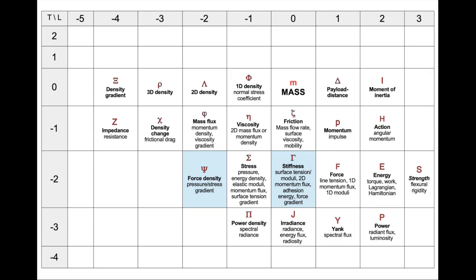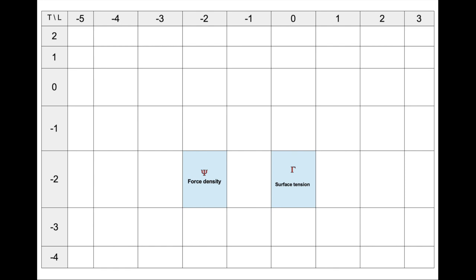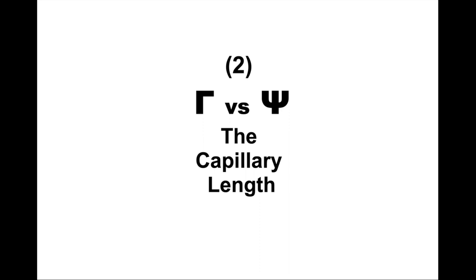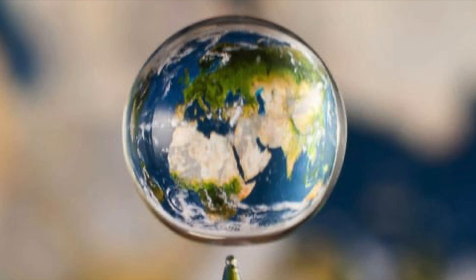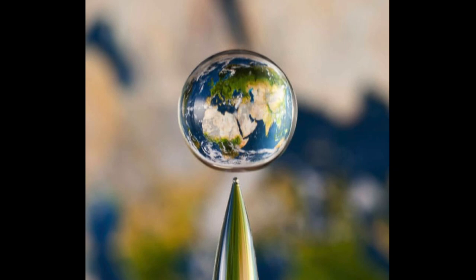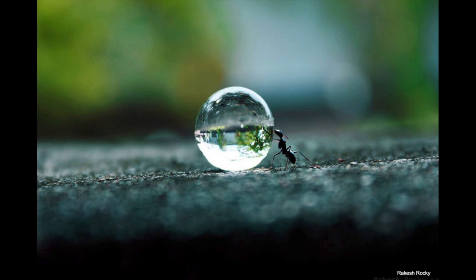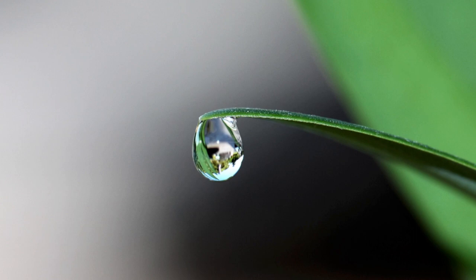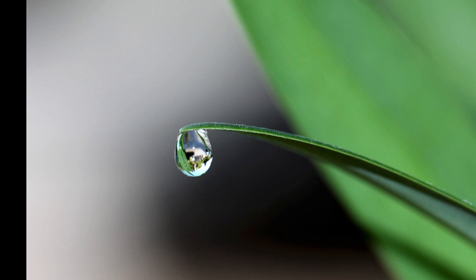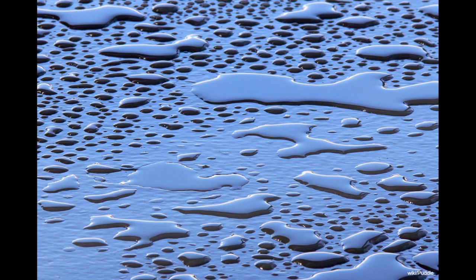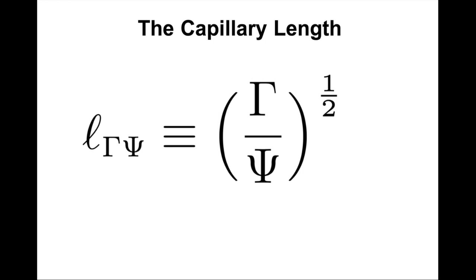Let's keep the force density but pair it with stiffness instead of stress. In this context, the stiffness is usually called surface tension, and the pair gamma and psi produce what is called a capillary length. This capillary length describes the size of a droplet — like one photographed by Marcus Rugel reflecting a world map in the background. What sets the size of droplets? Why does a droplet of dew fall when its size exceeds a limit? Above a critical size, droplets fall when hanging and form puddles on the ground. This critical size is the capillary length.